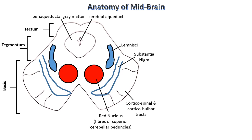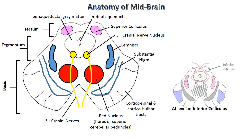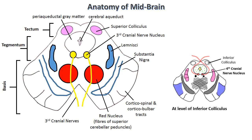Then coming to the tectum — all cranial nuclei in the brainstem are present in the tectum of their respective structures. So here is the 3rd cranial nerve nucleus. Dorsally there are the superior colliculi. After originating, the 3rd nerve goes ventrally to exit the brainstem. At the level of the inferior colliculus, there is the 4th cranial nerve nucleus. After originating, the 4th cranial nerve goes dorsally — it is the only cranial nerve which goes dorsally after origin, and this is also a very important MCQ point.